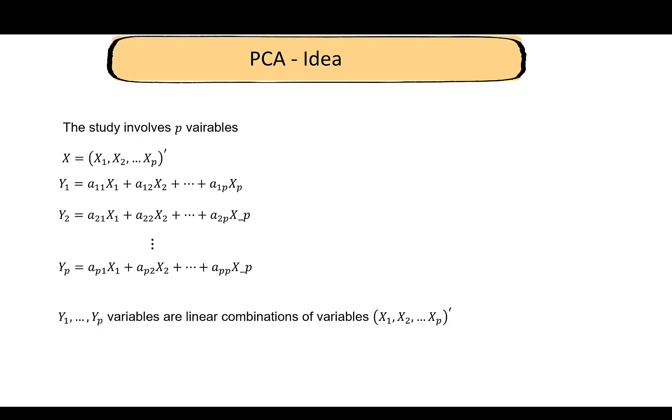At this point you might be wondering, we have p variables x₁ through xₚ that are the original ones, and we have new p variables which is Y₁ to Yₚ. How are we reducing the dimensions? We still have p new variables. What is the point of this? That's a legitimate question and I'll get back to it later on.